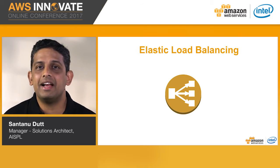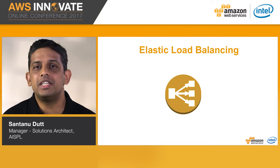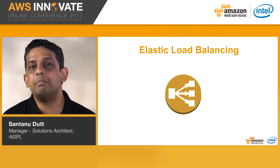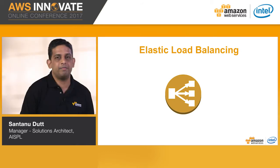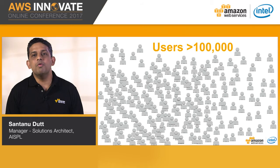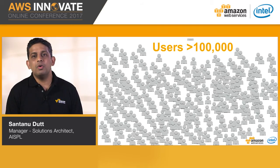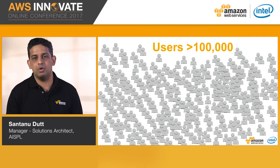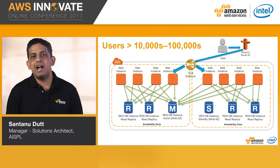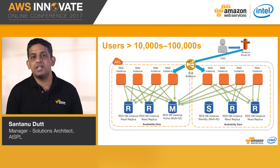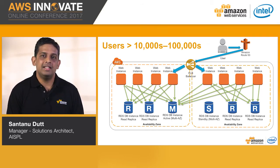ELB will do health checks for backend instances and remove them from service if they are unhealthy. This is a very key service in building highly available infrastructure on AWS. Now, how does your site look when it becomes even more popular with more than 100,000 users? We'll have Amazon Route 53 pointing into ELB, and ELB balancing requests across web instances. You can use the RDS master for writes and use RDS read replicas for serving your read traffic. The stack is now fault tolerant and has scaled quite a bit from where we started.